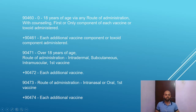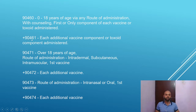There are six CPT codes used for vaccine administration. 90460 is for 0 to 18 years of patient age, via any route of administration, with patient counseling. This is a component-based code. 90460 is for the first or only component of each vaccine or toxoid administered. 90461 is for each additional vaccine or toxoid component administered.